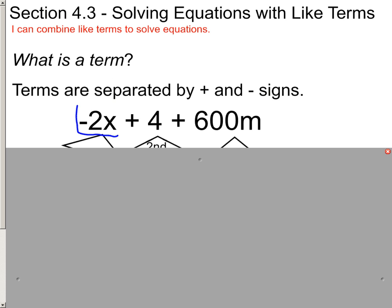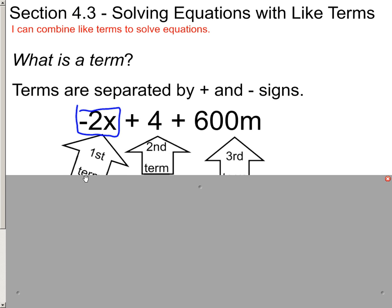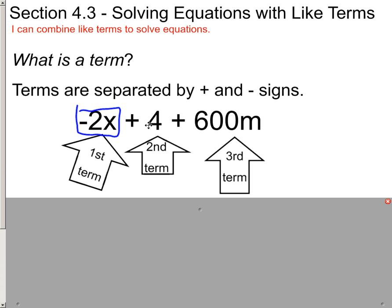Here's negative 2x, and then it bumps into this plus sign, so this is our first term. This 4 is our second term, and I always tell my students make sure you grab the sign in front of it. It helps you out. And then the 600m is attached to the plus sign.